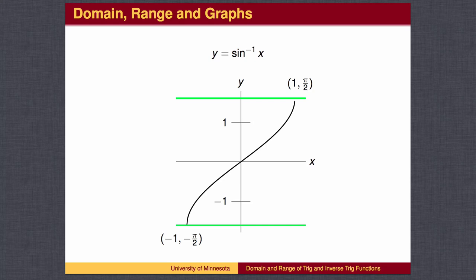The inverse sine graph looks like this. It begins at the bottom left at the point negative 1, negative pi over 2. It can't go below negative pi over 2, since if it did, it would start bending back to the right, causing the graph to fail the vertical line test. It likewise ends at the point 1, pi over 2. The domain goes from negative 1 to 1, and the range from negative pi over 2 to pi over 2.